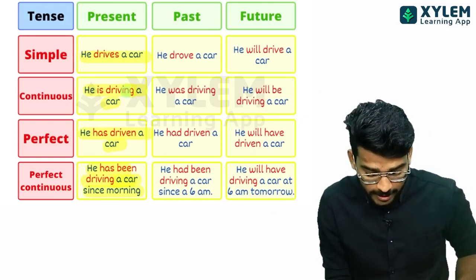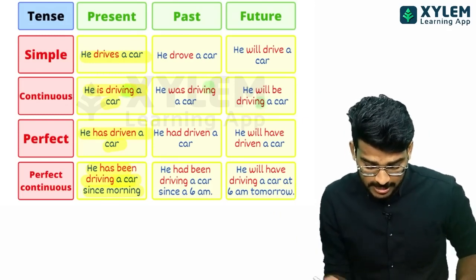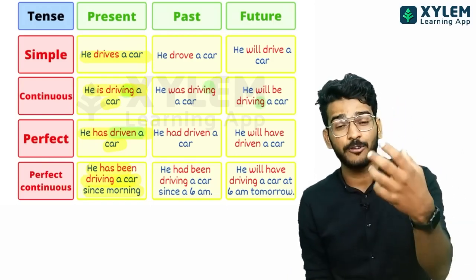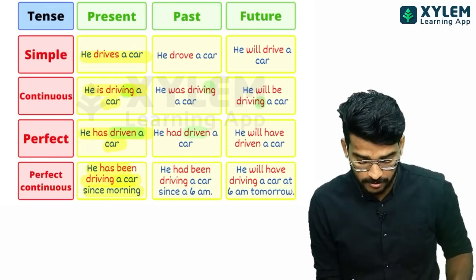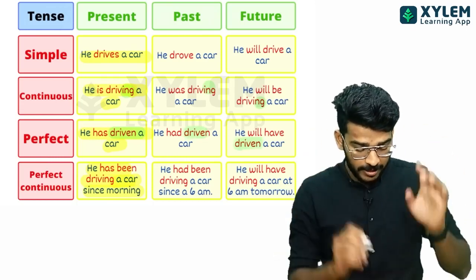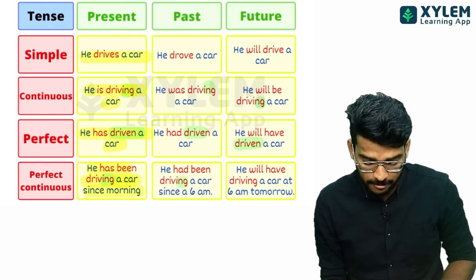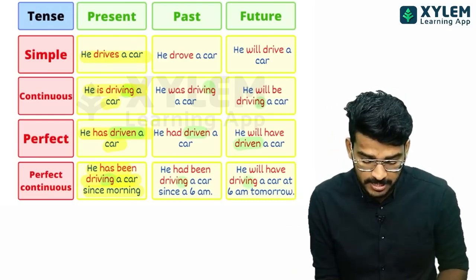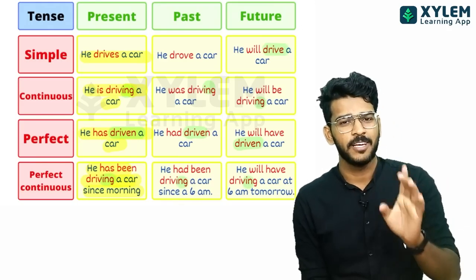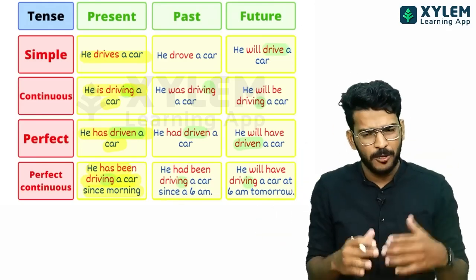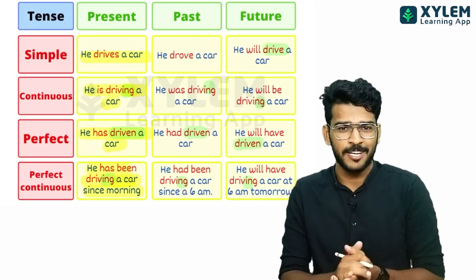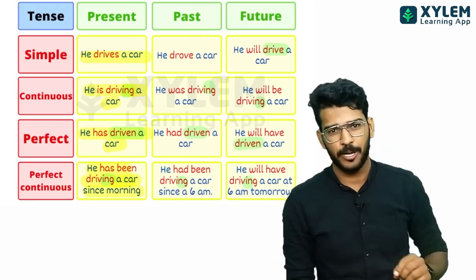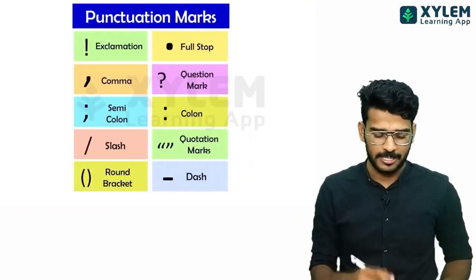Okay. So for continuous tenses, we use the -ing form. For perfect tense, there is a third form — driven. This is the technique: continuous tenses use the -ing form, perfect tenses use the third form of the verb. You can read it. The second step is the function, the third one is the function.